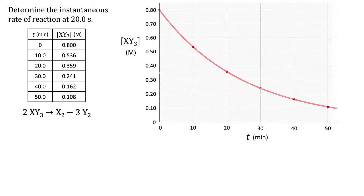We need to make a very careful graph, whether using graph paper by hand or a graphing program. Plot the points carefully with time on the x-axis versus concentration on the y-axis. Our concentration is of XY₃. Then carefully plot the points and draw a smooth curve through those data points.